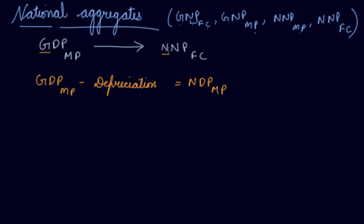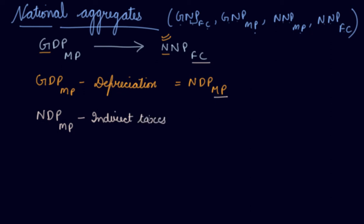Now you have to convert MP into factor cost. From MP into factor cost, how will you go? You will take NDP at MP, deduct indirect taxes, and add subsidies. You will get NDP at FC. So we have reached the N and FC point.